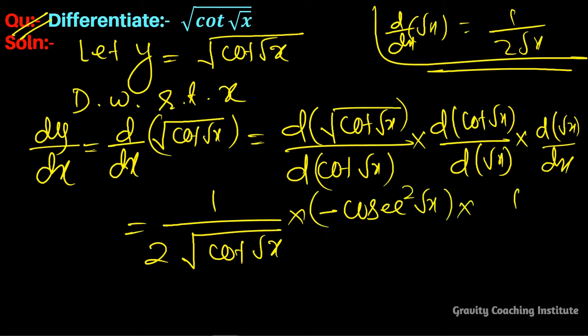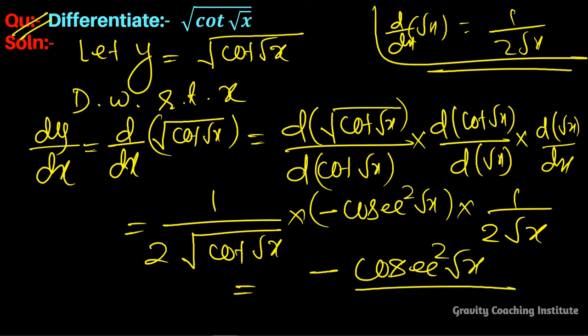For root x, it will be 1 over 2 root x, so this equals minus cosec squared root x over 4 root x root cot root x. Multiplying this gives us the final answer.